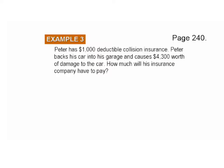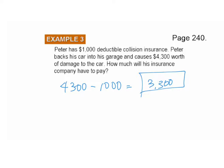Here's Example 3 from page 240. Peter has a $1,000 deductible on his collision insurance. Peter backs his car into his garage and causes $4,300 worth of damage to the car. How much will his insurance company have to pay? If you're thinking not all of it, you're thinking correctly. It would be $4,300 minus the deductible of $1,000, so the insurance company pays $3,300 and Peter pays the $1,000.